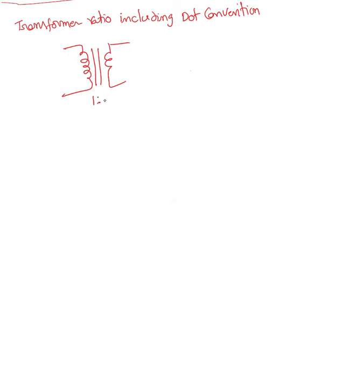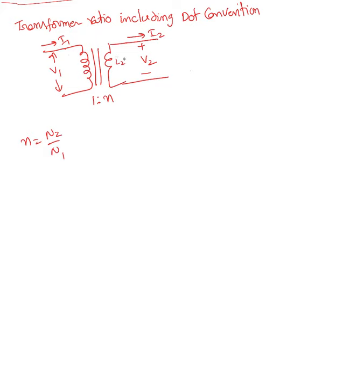The turns ratio is 1:n, where n is n2 over n1. Remember, i1 current is always entering. This is v1 and v2. i2 current is leaving because inductor 2 is going to act like a source for the second circuit — because of induction, an EMF is induced across the second coil and it acts like a source, which is why i2 is leaving.